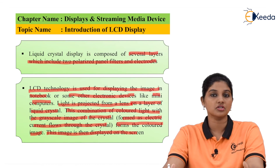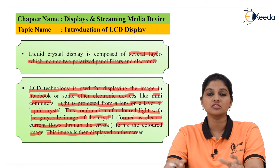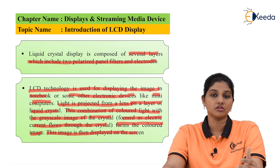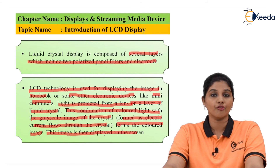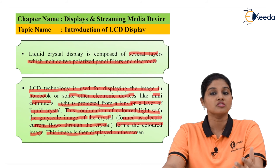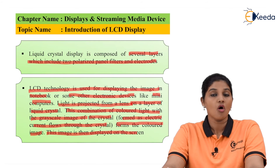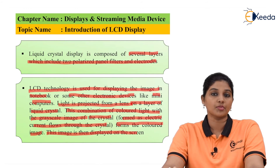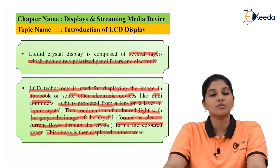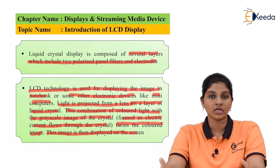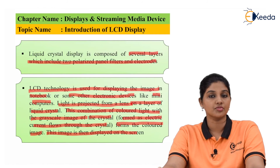The more detailed working of the LCD will be covered in other videos, but this is a short introduction. The advantages of LCD are: displays are much thinner compared to CRT, weight is less, it provides superior picture quality, and the viewing angle is not a problem. Depending on the application, there are different types of LCD, but the two main types are active and passive LCD, depending on the technology used for producing a visible image on the screen.